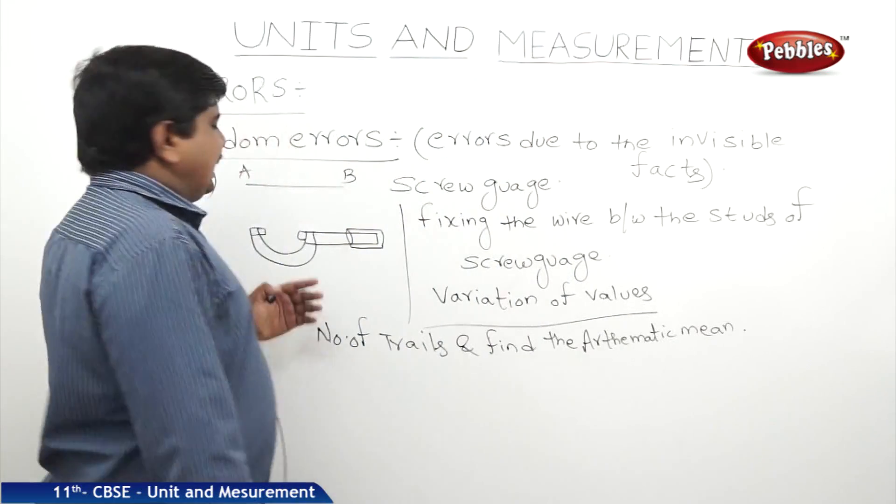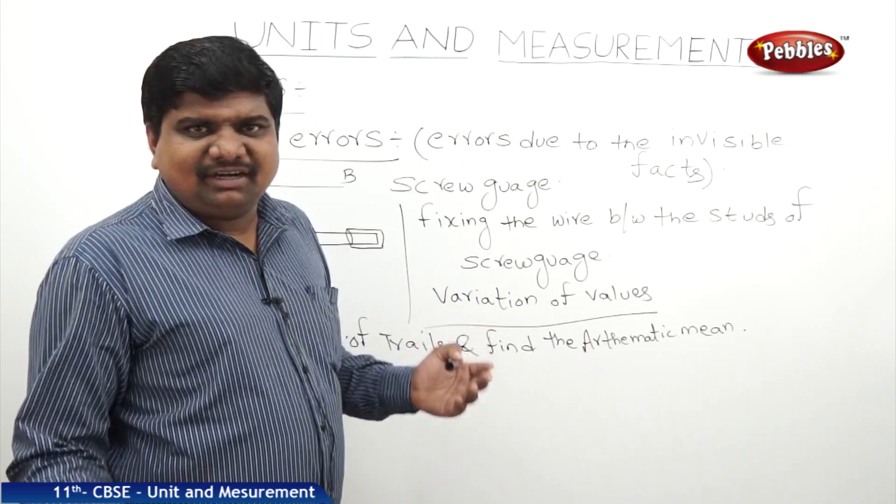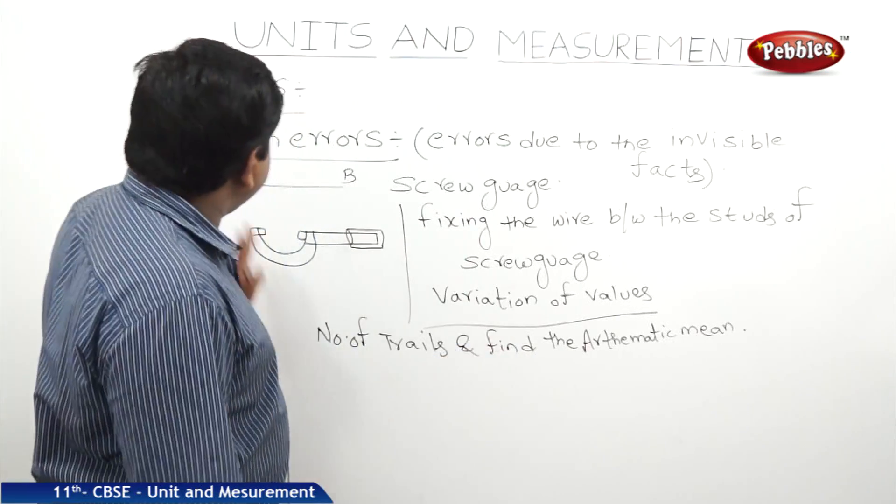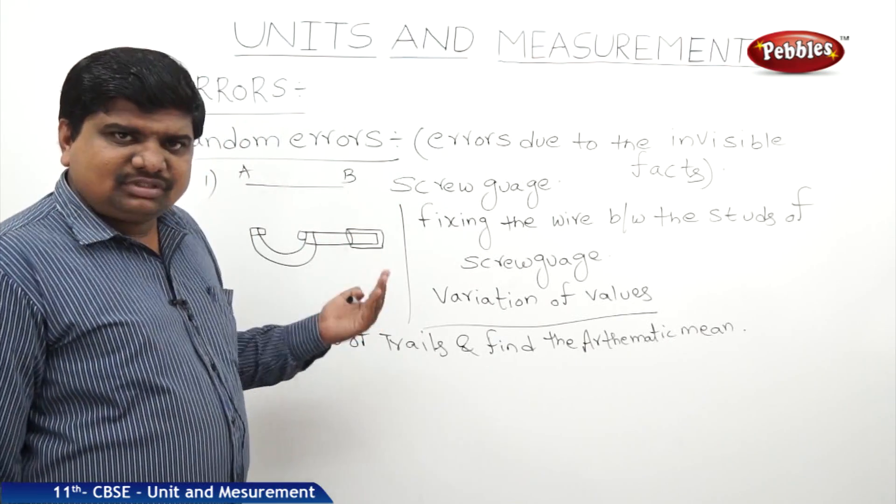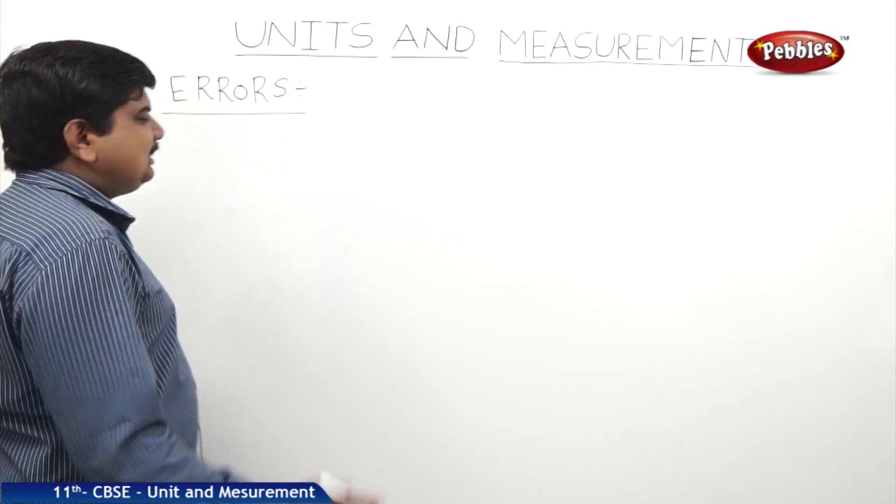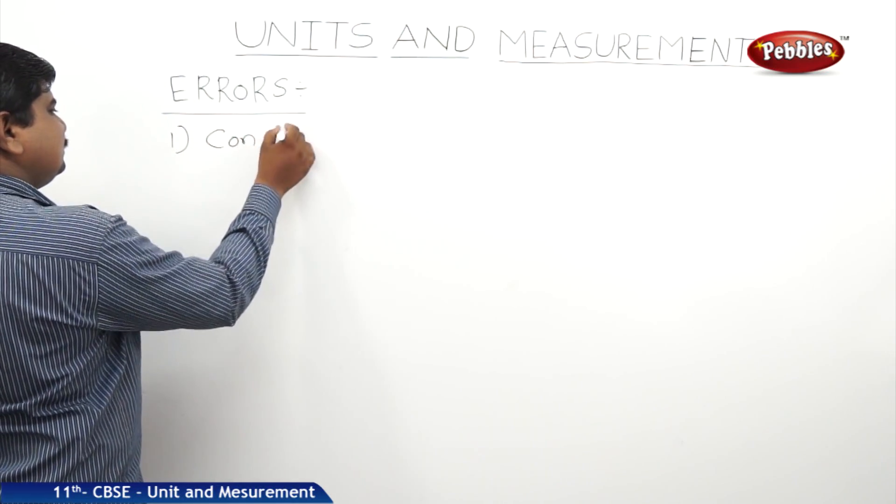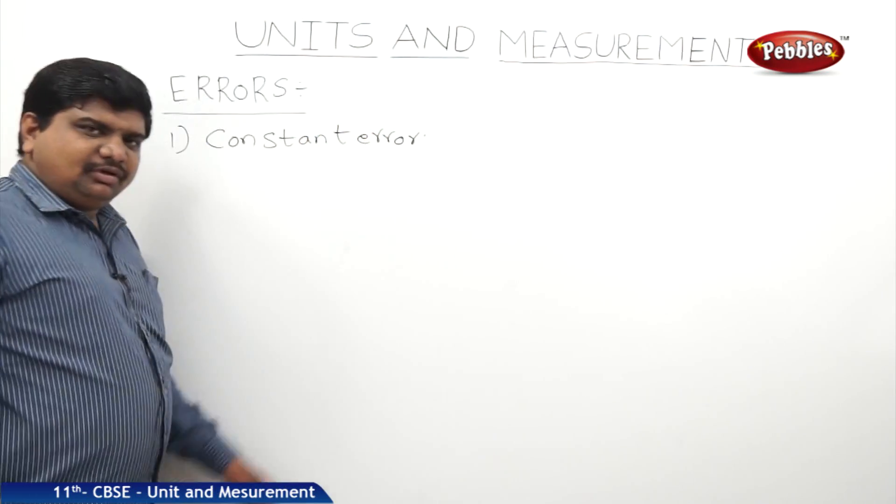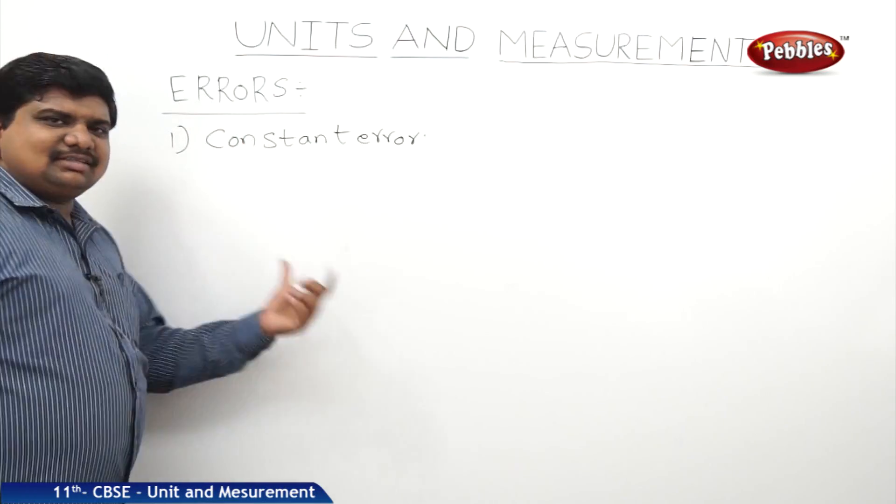This is not that much subclassified, but like in the previous cases, we can see the examples for this random error. Next, we will discuss some more errors which affect the result of the experiment. The next subclassified errors are, first one, constant error. Before this one, we have discussed about the random errors and systematic errors, and these are the next classification.